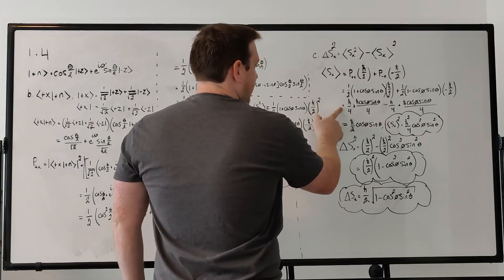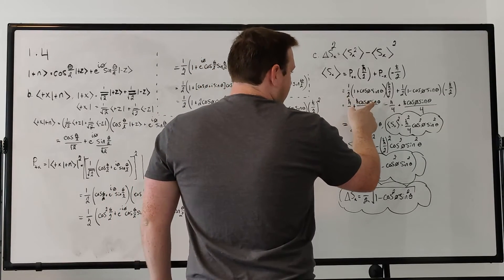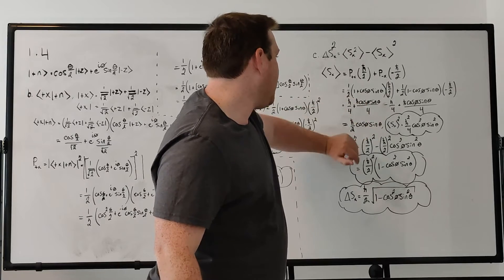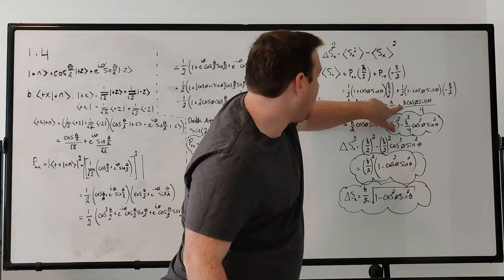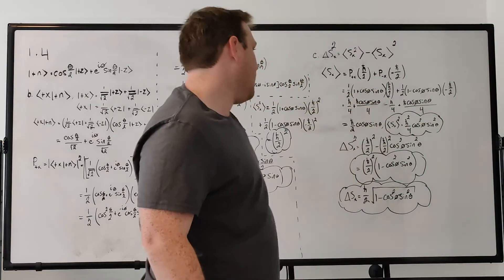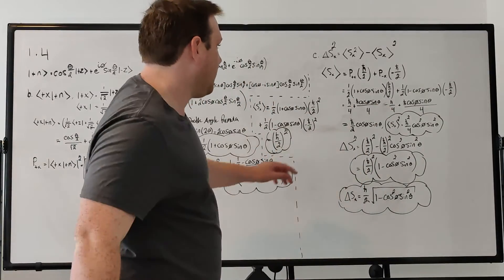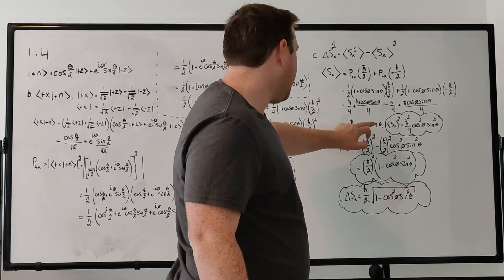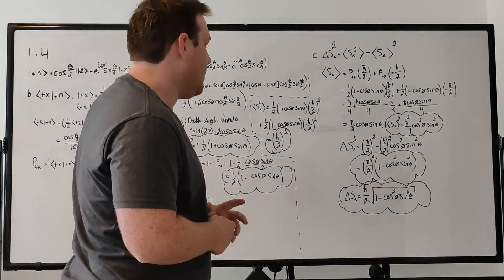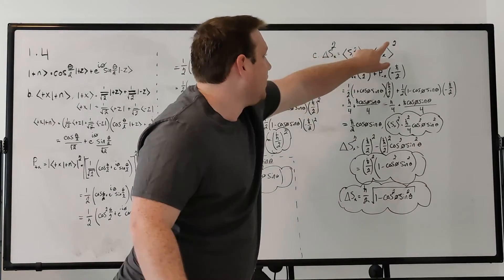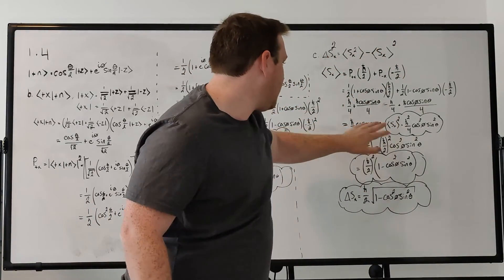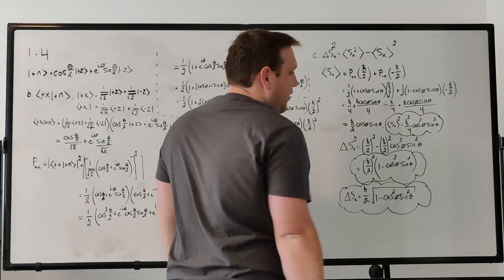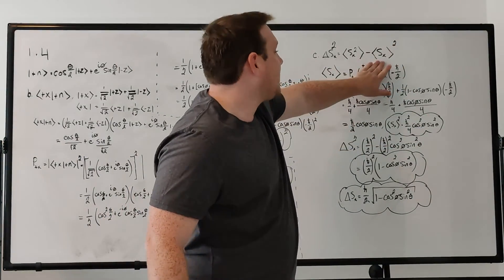Doing the multiplication, you get h-bar over 4 plus h-bar cosine phi sine theta over 4, then minus h-bar over 4 plus h-bar cosine phi sine theta over 4. The h-bar over 4 terms cancel, and the two cosine phi sine theta terms add together, cancelling the factor of 2 in the denominator to give the expectation value of Sx equals h-bar over 2 times cosine phi times sine theta. Squaring that gives h-bar squared over 4 times cosine squared phi times sine squared theta.